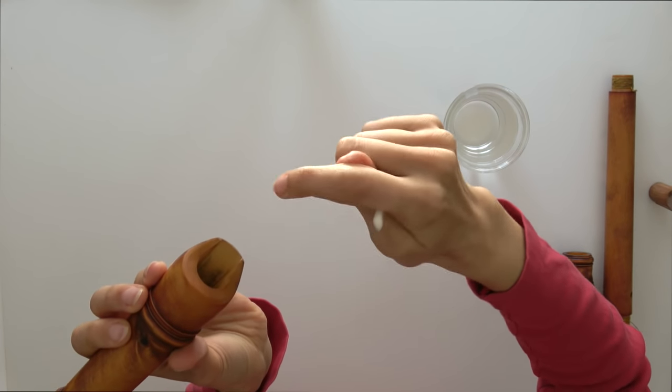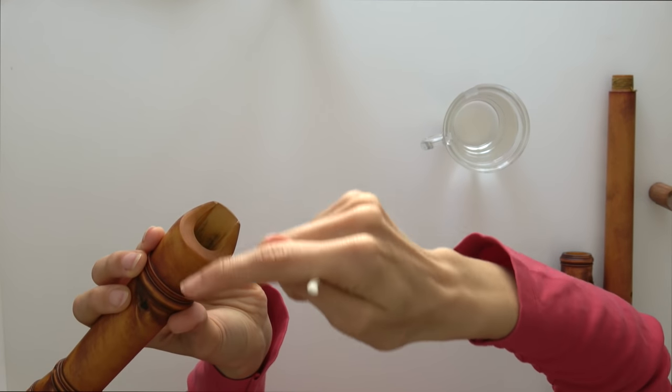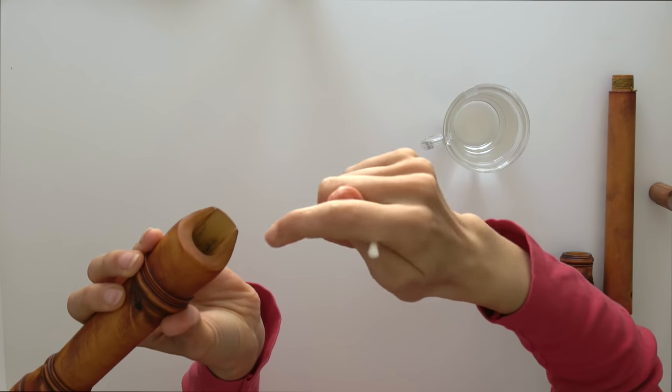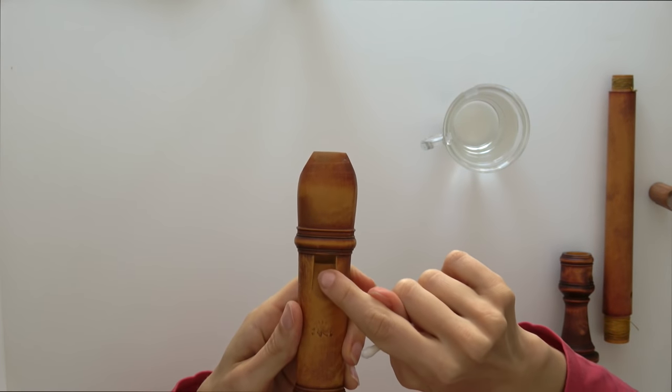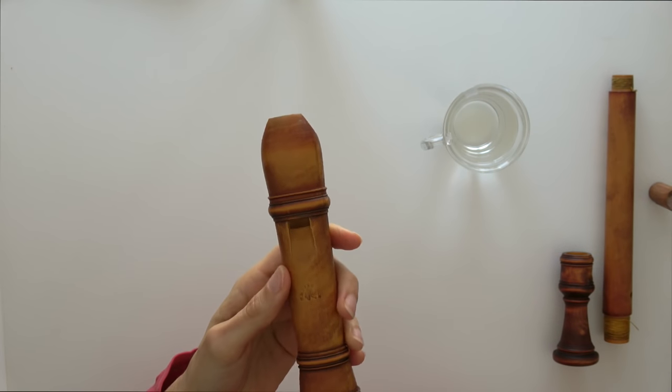So you only clean the flat part of the windway, not the rounded part. Be very careful with the labium, it's so delicate you could easily destroy the sound.